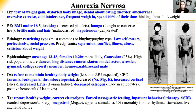Treatment for anorexia: restore healthy body weight and correct electrolyte abnormalities, since electrolyte imbalances ultimately cause death. This may require forced nasogastric feedings and inpatient behavioral therapy. SSRIs address the emotional component. Megestrol is an appetite stimulant. The death rate is 10%, with causes including arrhythmia, starvation, and liver and renal failure.